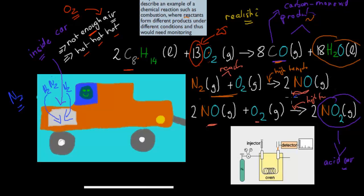That's how we have the same reactants but different products, depending on the conditions — depending on the temperature in this case. At normal temperatures we don't form them; at high temperatures we form them. Same with the octane: octane combines with oxygen to normally form carbon dioxide, but if we don't have enough oxygen — if the condition is different — we form not carbon dioxide, but carbon monoxide. So that was at least the first part: the reactants form different products under different conditions.